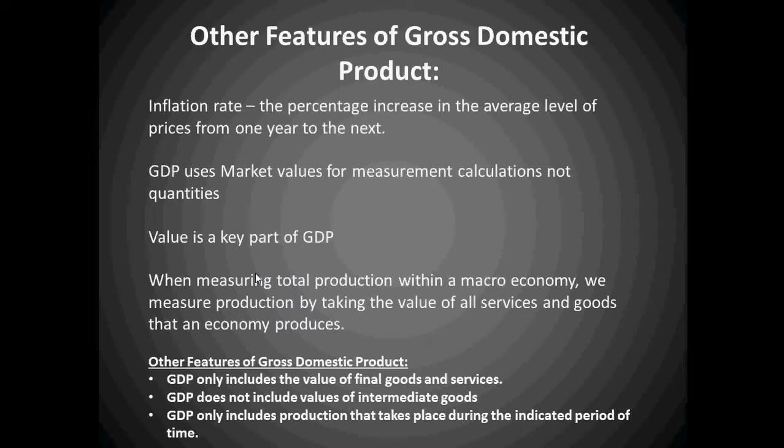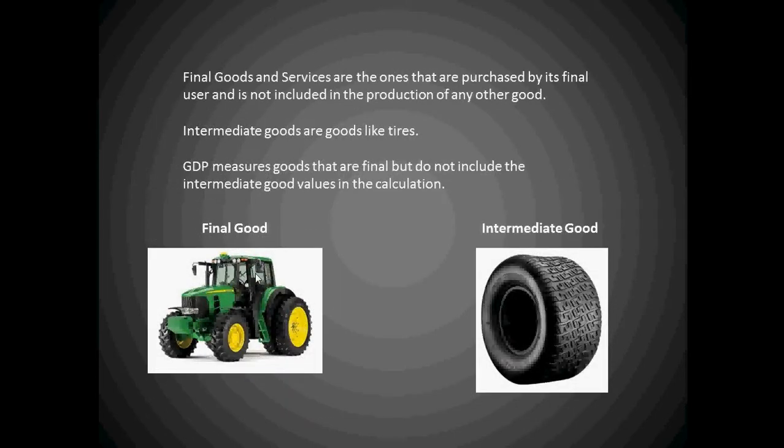Final goods and services are those purchased by the final user and not included in the production of any other good. Intermediate goods are goods like tires, and final goods would be the tractor shown at the bottom left. GDP measures final goods but does not include intermediate goods in the calculation — that is important.